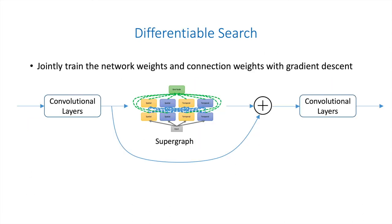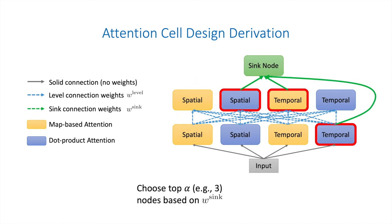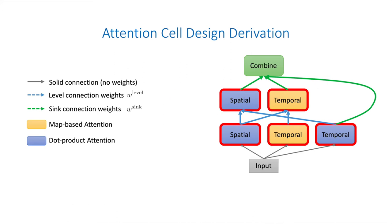During the search, we insert supergraphs into the backbone network and jointly optimize the network weights and connection weights by minimizing the training loss using gradient descent. Once the training is done, we derive the attention cell design from the learned weights. We choose the top alpha nodes based on sink connection weights. And then, for each selected node, we select its top beta predecessors based on level connection weights, and repeat this process recursively until we reach the first level. Finally, we remove unselected nodes and obtain our discovered attention cells.